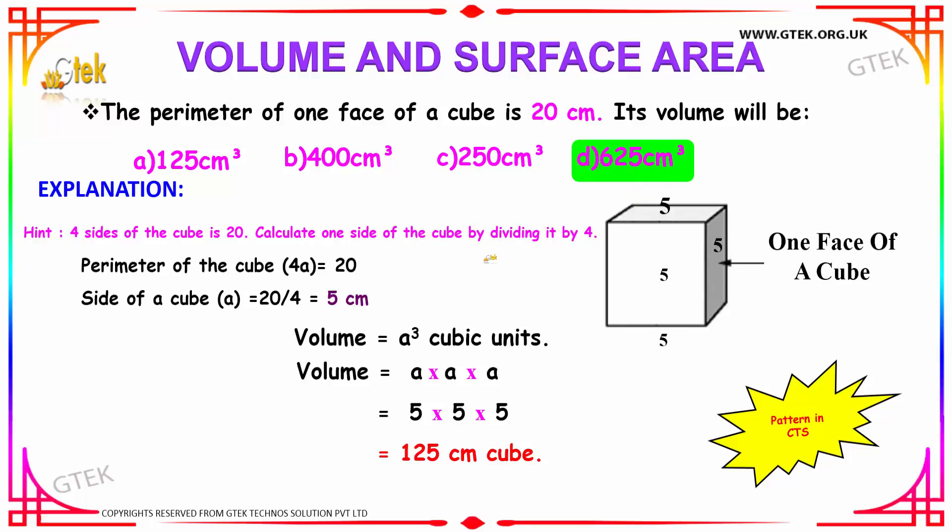As I said, the perimeter of a square is nothing but 4a, so it is similar to the cube. The perimeter of the cube is given to be 20. So the side of the cube can be found by dividing 20 by 4, which is nothing but 5.